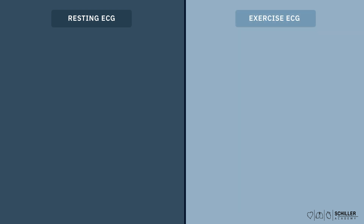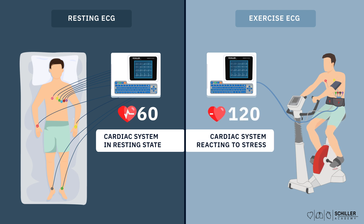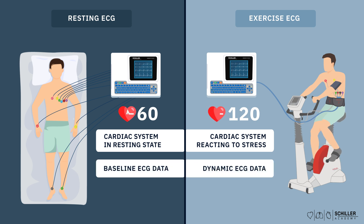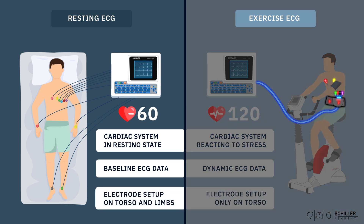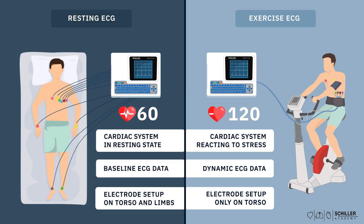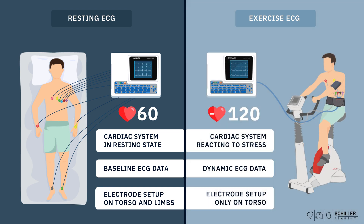The most obvious difference between a resting ECG and an exercise ECG is that once the patient is at rest, and once the patient is exposed to physical stress, which is meant to increase oxygen demand. Hence, the exercise ECG can reveal heart conditions that might not be evident in a resting state, and can provide more dynamic information. The electrode setup of an exercise ECG differs slightly from a resting ECG, as the limb electrodes are transposed to the torso of the patient to reduce movement artifacts induced by running or pedaling.